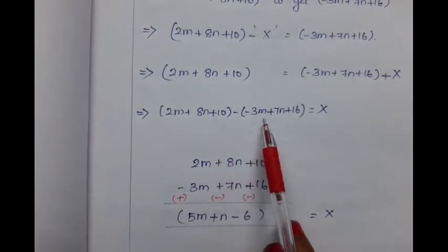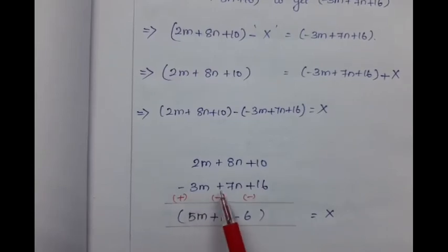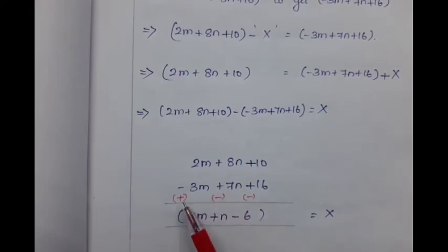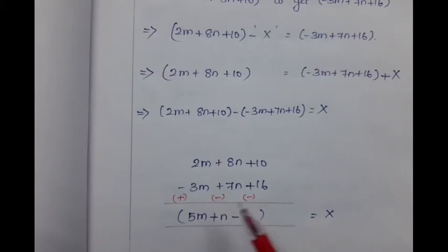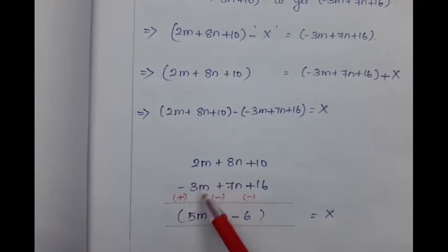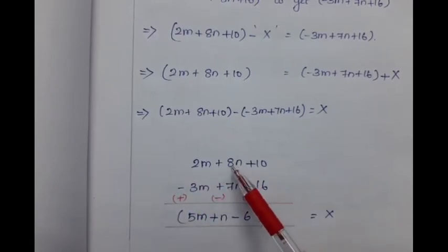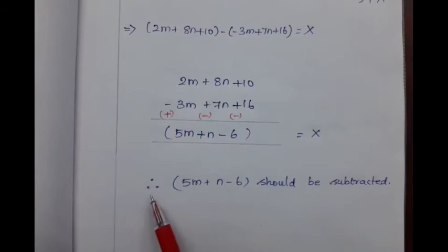Subtracting the second expression from the first: 2m plus 8n plus 10 minus (minus 3m plus 7n plus 16). Before subtracting, we change its sign: minus 3m becomes plus 3m, plus 7n becomes minus 7n, plus 16 becomes minus 16. After changing the sign, we add the two expressions. Adding 2m with 3m we get 5m. Adding 8n with minus 7n we get plus n. Adding plus 10 with minus 16 we get minus 6. So x equals 5m plus n minus 6, hence 5m plus n minus 6 should be subtracted.